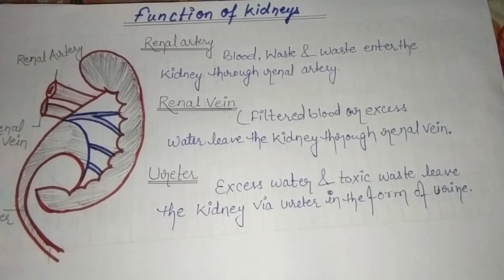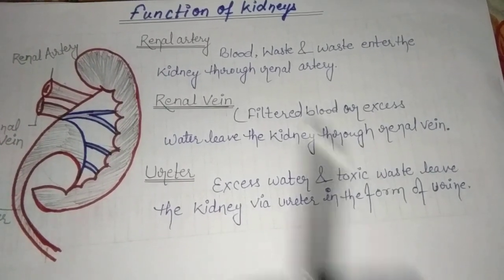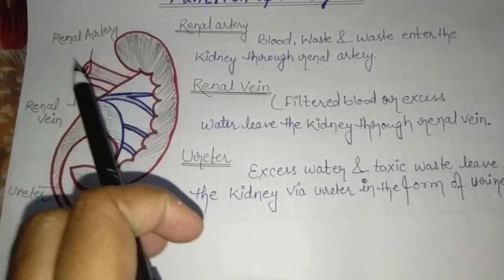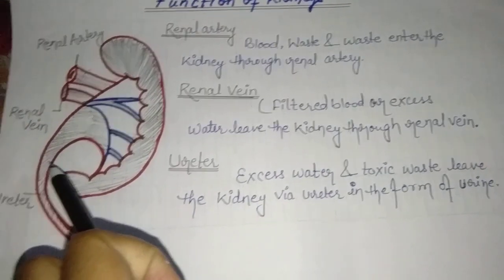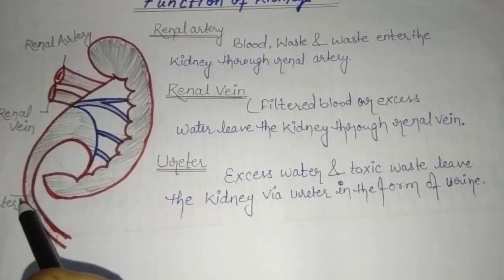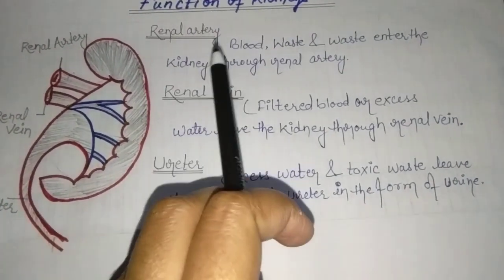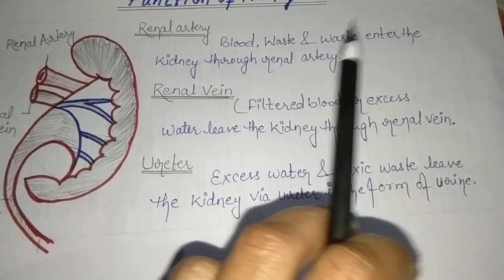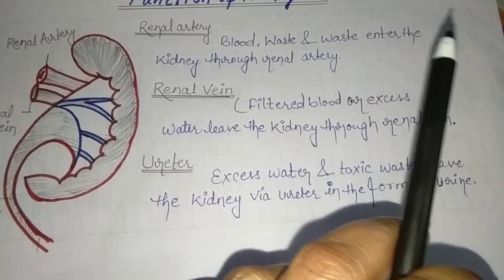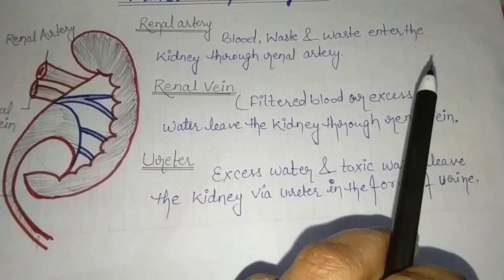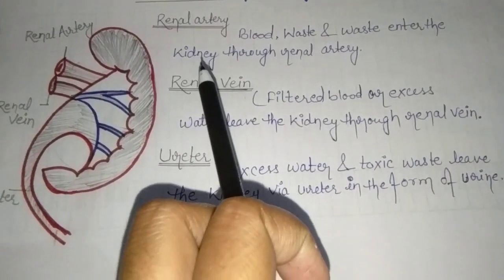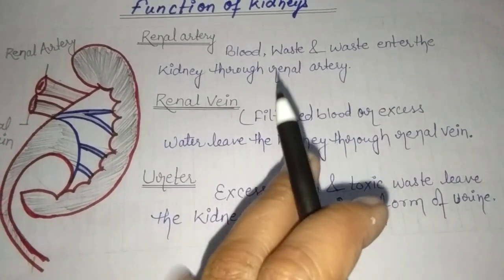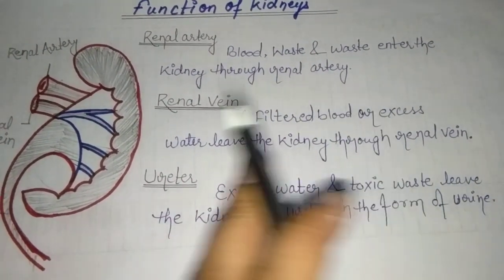Welcome friends and dear children to this topic: function of kidneys. The renal artery, renal vein, and ureter are key structures. Blood and waste enter the kidney through the renal artery.